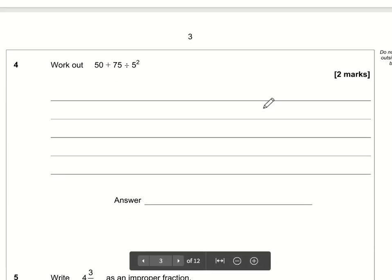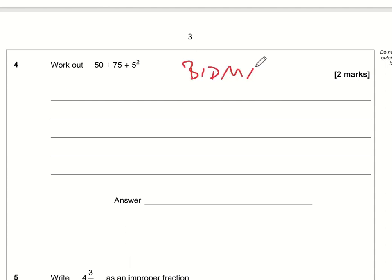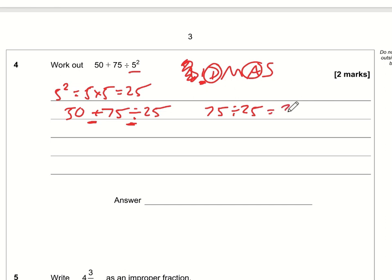Question number four. Work out 50 plus 75 divided by five squared. So this question is testing our understanding of BIDMAS. There are no brackets but there are some indices. Five squared means five times five which is 25. So the question is now 50 plus 75 divided by 25. We have adding and dividing. We do the dividing before we do the adding. 75 divided by 25 is three. So the question now is just 50 plus three which is 53.